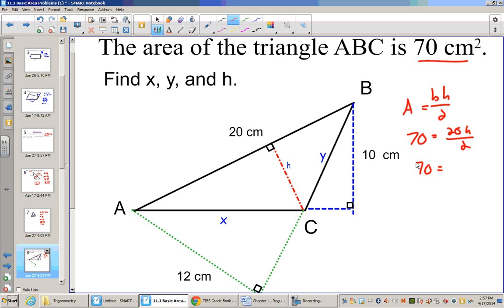But 20 divided by 2 is 10. Divide both sides by 10. And my height is now 7. So this equals 7.